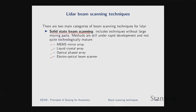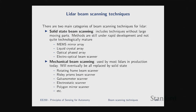Most LiDARs today use mechanical beam scanning — techniques with large moving mechanical parts. Either the entire transmitter frame rotates, or optical elements like prisms or mirrors in the beam path are moved. Examples include rotating frame scanners, prism scanners, galvo mirror scanners, and polygon mirror scanners.